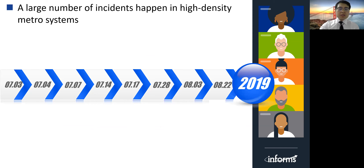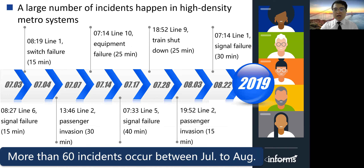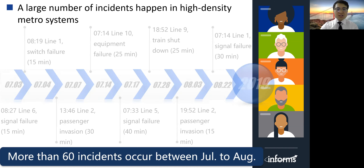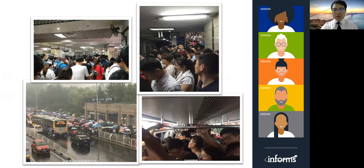Meanwhile, it is a big issue that a large number of incidents happen in a high-density metro system. For example, we recorded the incident data of Beijing subway in 2019 from July to August. It is shown that nearly every day an accident happens that delays passengers, and totally more than 60 incidents occurred between July and August in Beijing metro in 2019. Due to these accidents, a large number of passengers are delayed in the metro system, which greatly reduces the service quality of the system.